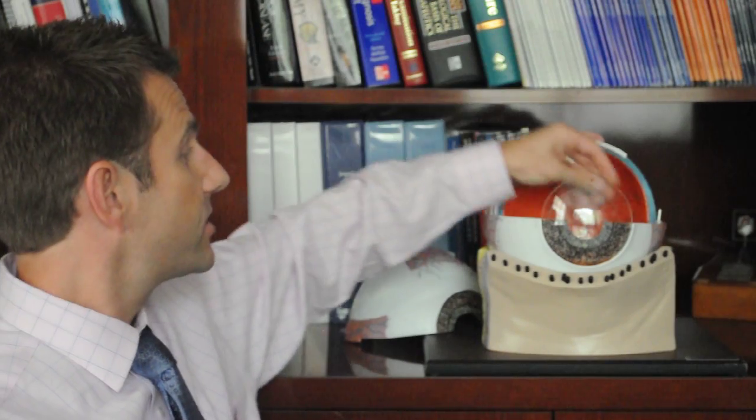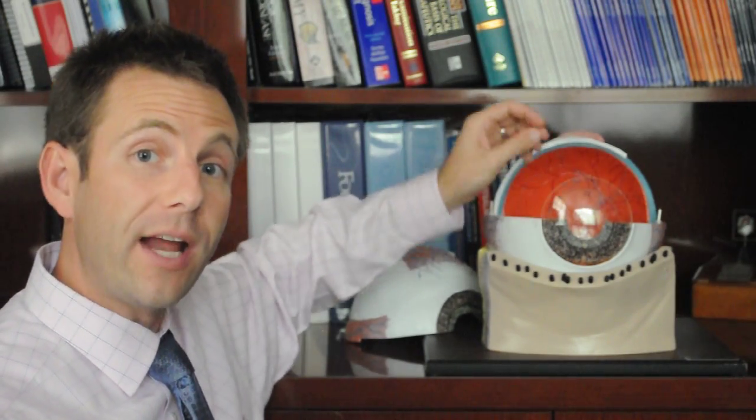The primary reason that we are concerned about vitreous detachment and these new flashes and floaters is that it could indicate there is a problem with the retina. While the vitreous detachment is normal, it is not normal for the vitreous to pull or tear the retina, which could cause a break in the retina. That could lead to retinal detachment, a serious problem that would need to be treated immediately.